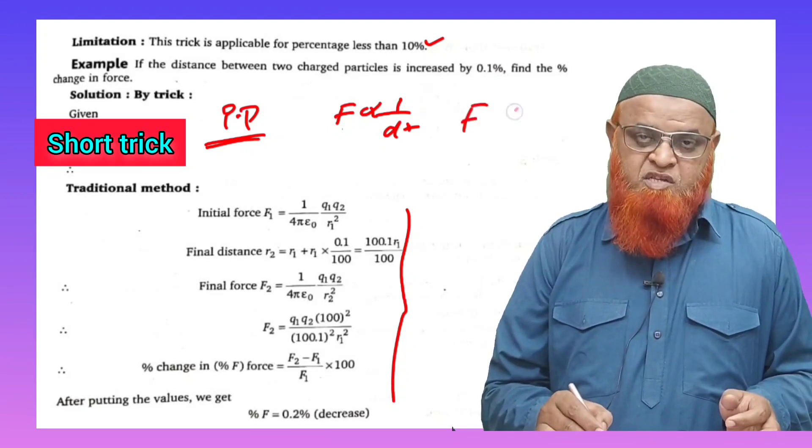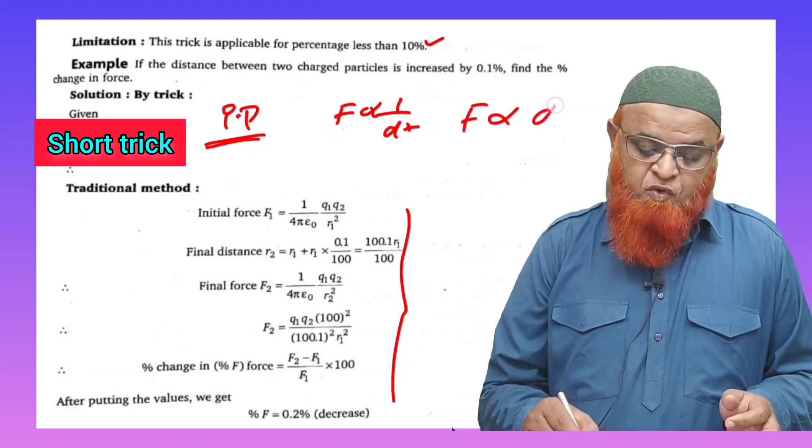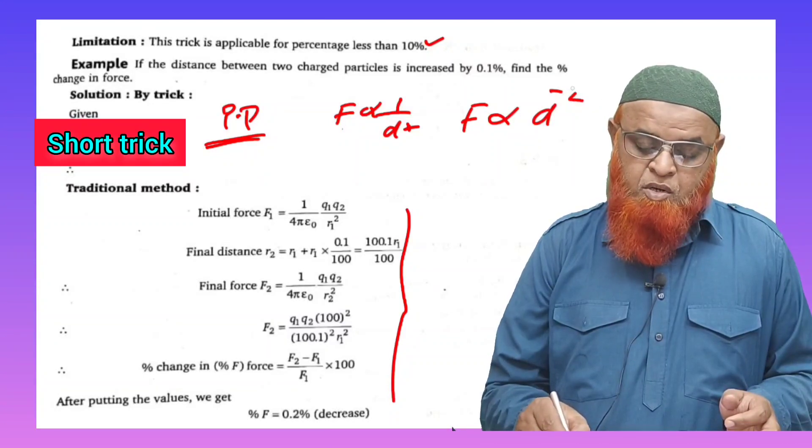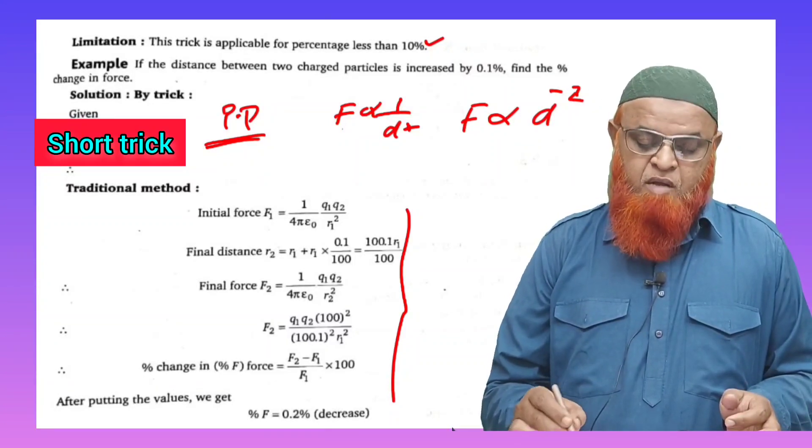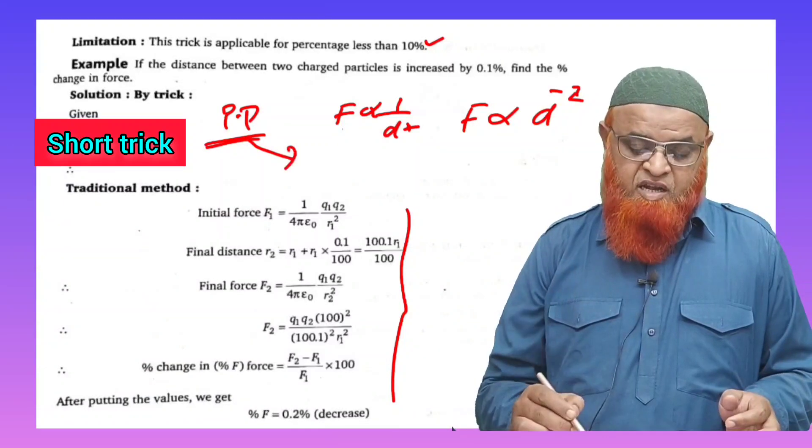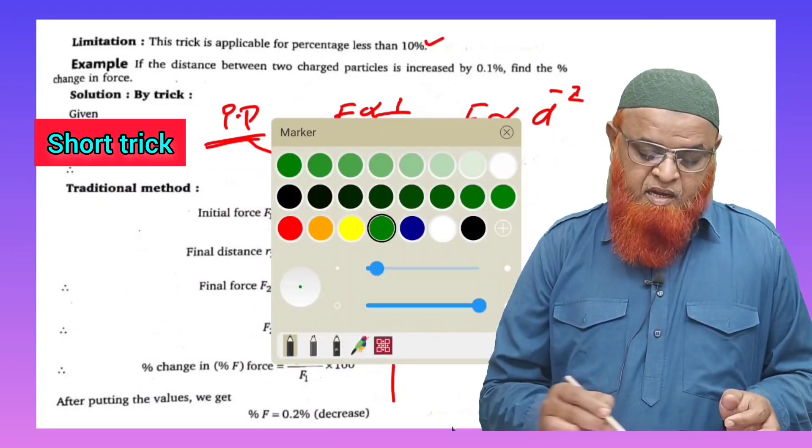Force is inversely proportional to d square. That means force is directly proportional to d to the power of minus 2. The PP technique - power percentage technique - explains this relationship.